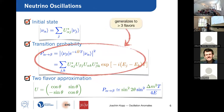The general formula for neutrino oscillation probability did not depend in any way on there being exactly three neutrino flavors. The whole derivation works in exactly the same way if there are more than three flavors — the mixing matrix is then a 4×4, 5×5, or 6×6 matrix rather than a 3×3 matrix, but otherwise neutrino oscillations work in exactly the same way.